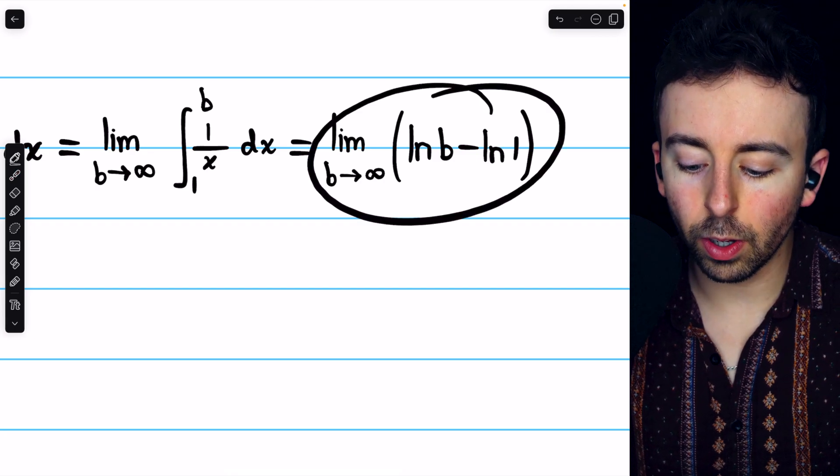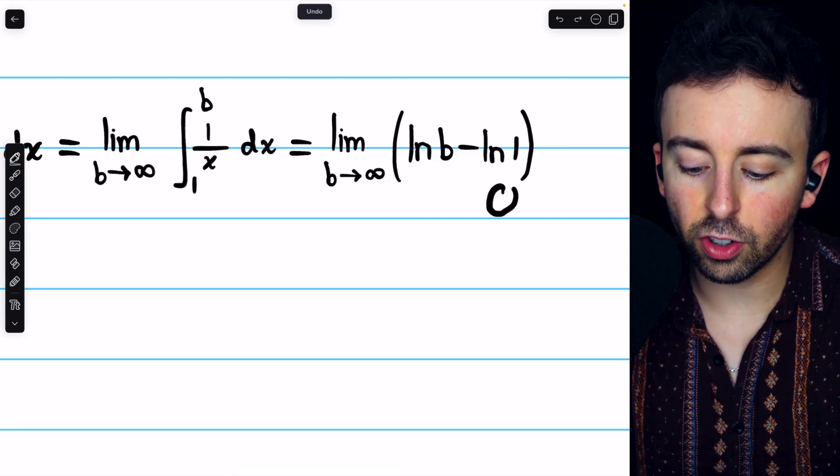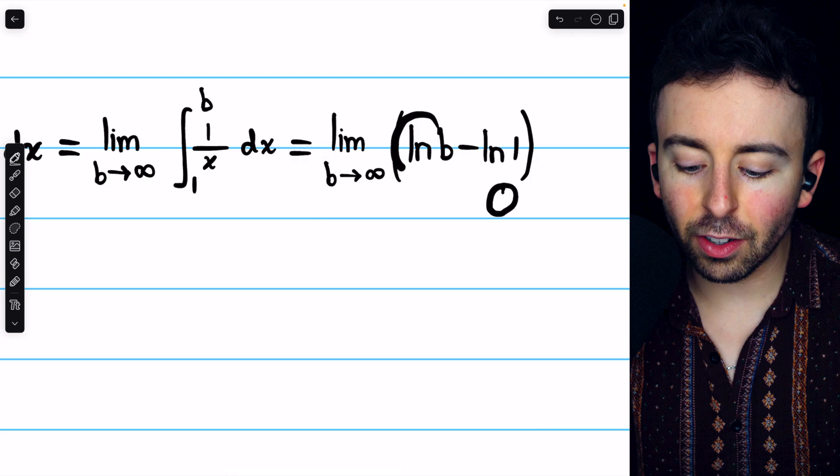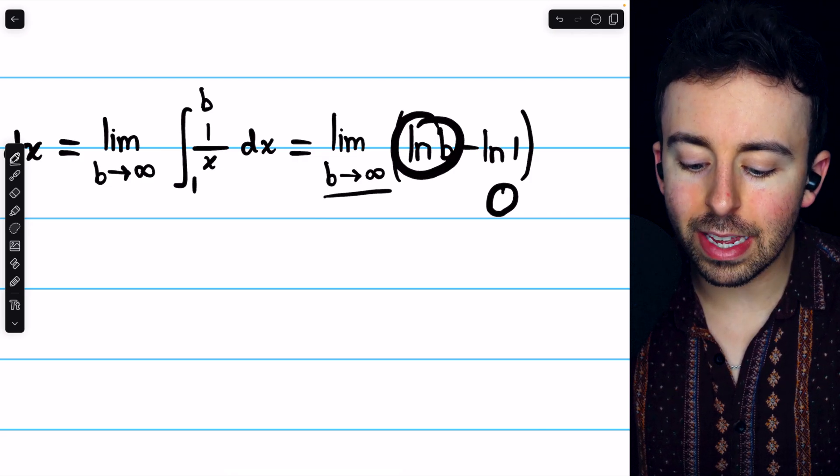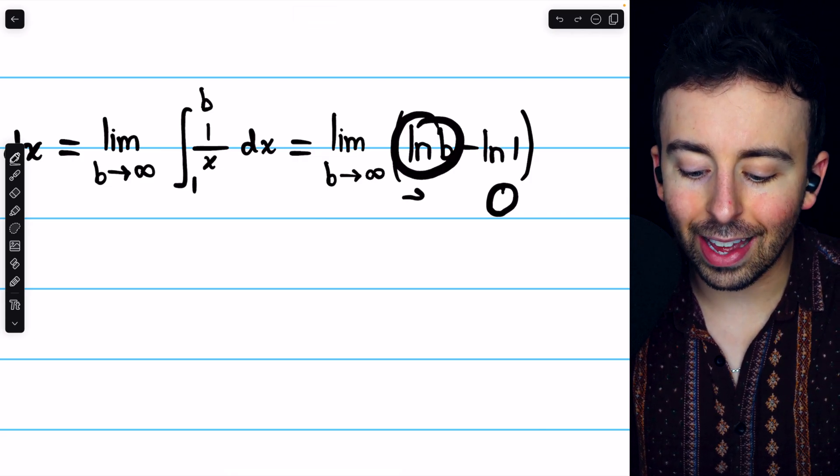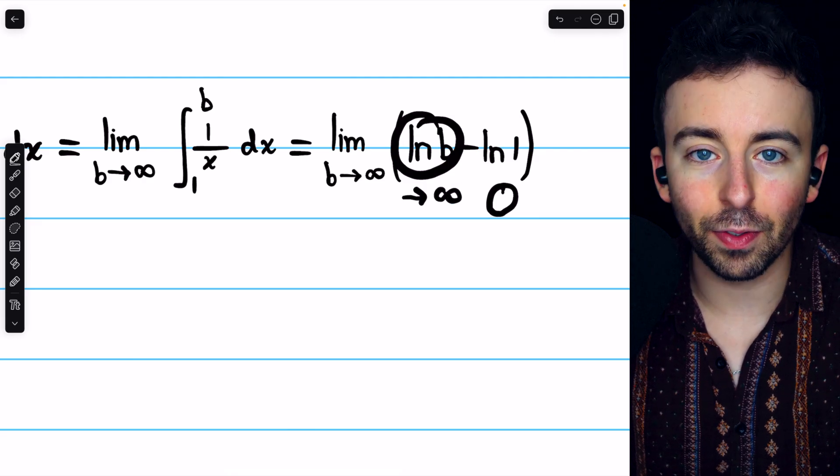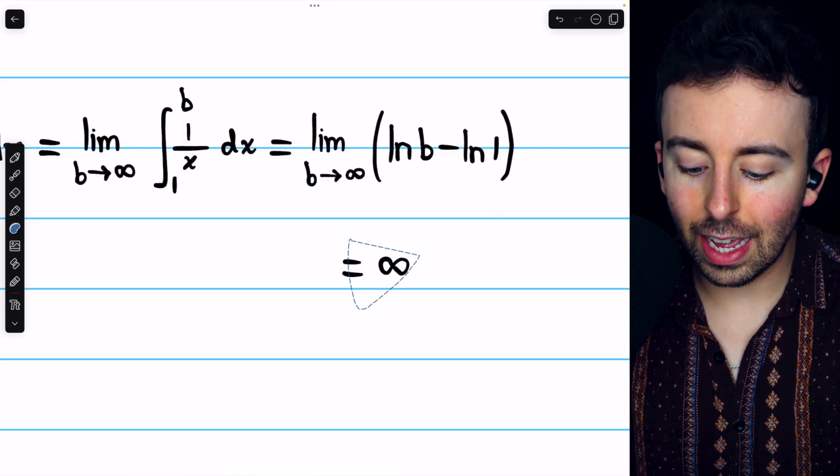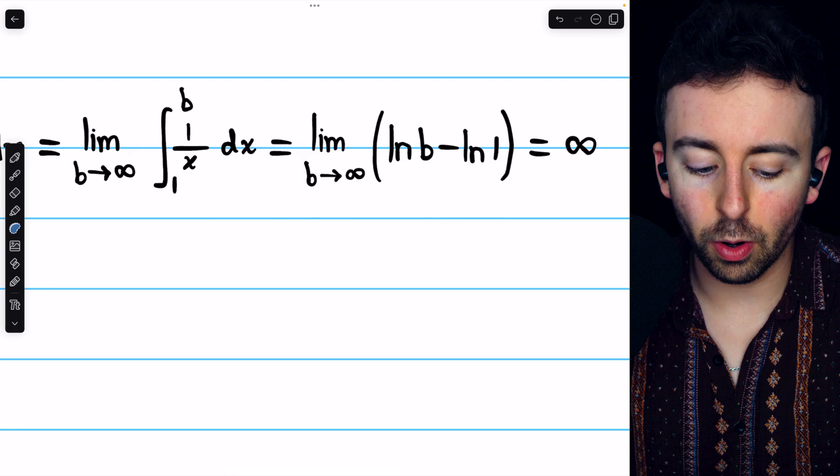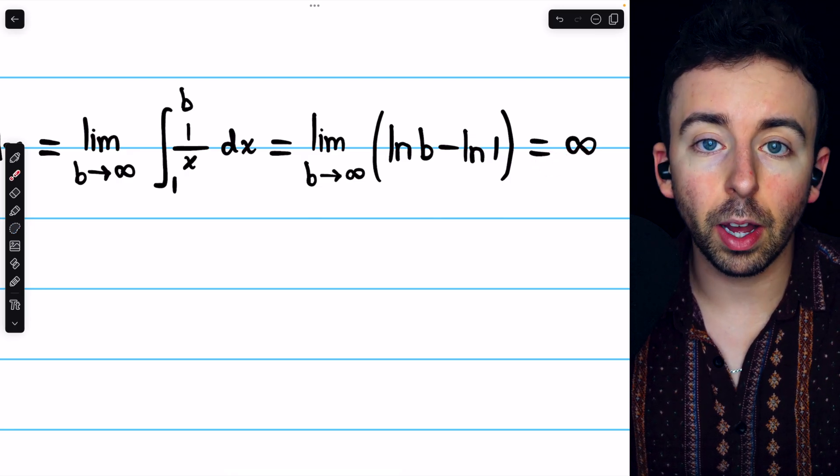Then what does this limit equal? Well, the natural log of 1 is just 0 and the natural log of b, as b goes to infinity, hopefully you know that diverges to infinity. The natural log function gets arbitrarily large and so this limit diverges to positive infinity.